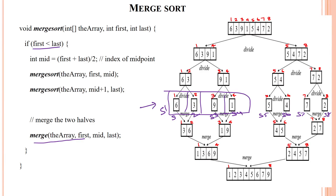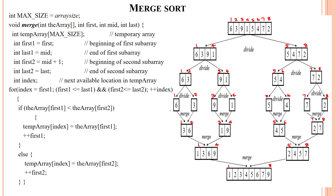This is the merge method in merge sort. Once we have individual elements in each sublist, we call the merge method. In this merge method, we merge individual elements together. We pass the array — the first array and second array — and define a temporary array with the maximum size, which is the array size of 8.